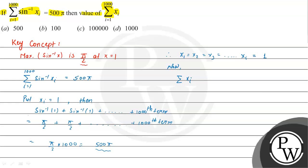Now we need to find the value of summation of xᵢ where i is varying from 1 to 1000. Since x₁ = 1, x₂ = 1, x₃ = 1, and so on up to 1000 terms, the sum is 1 multiplied by 1000, which is equal to 1000.